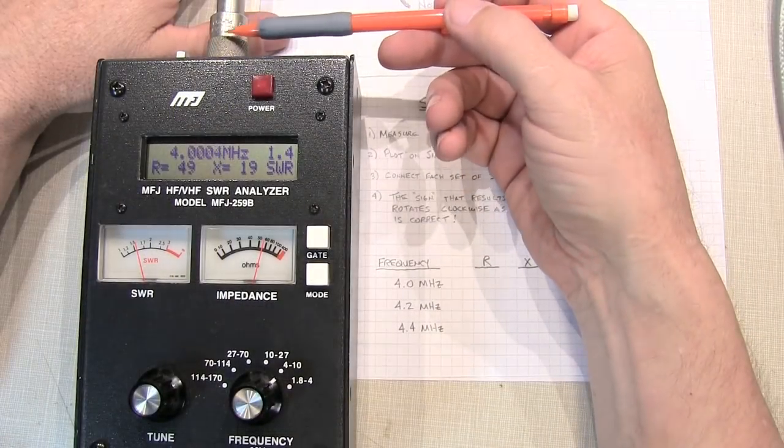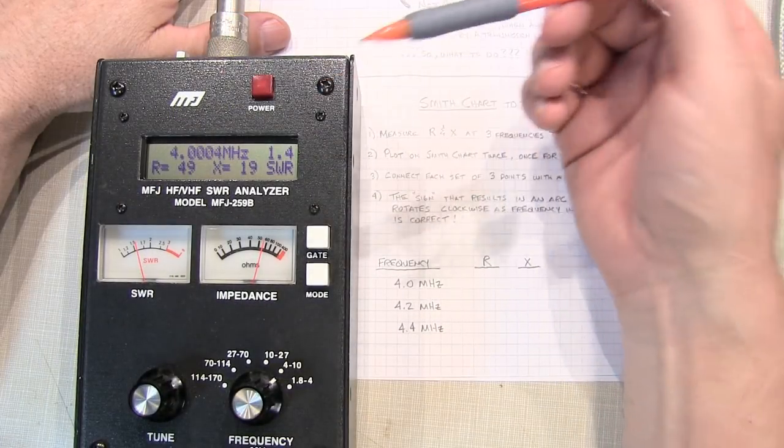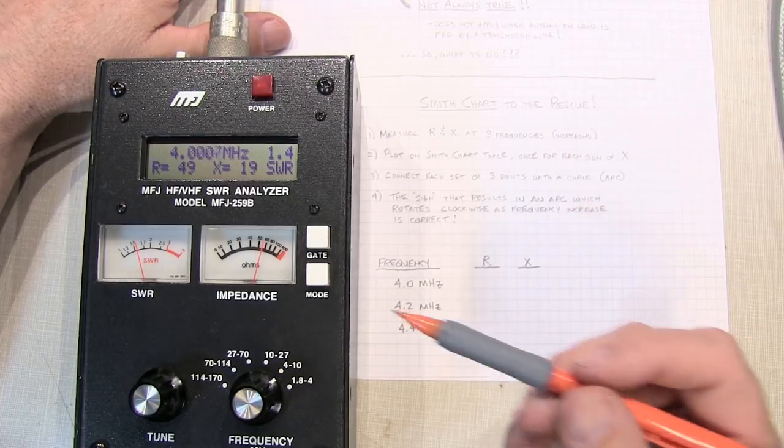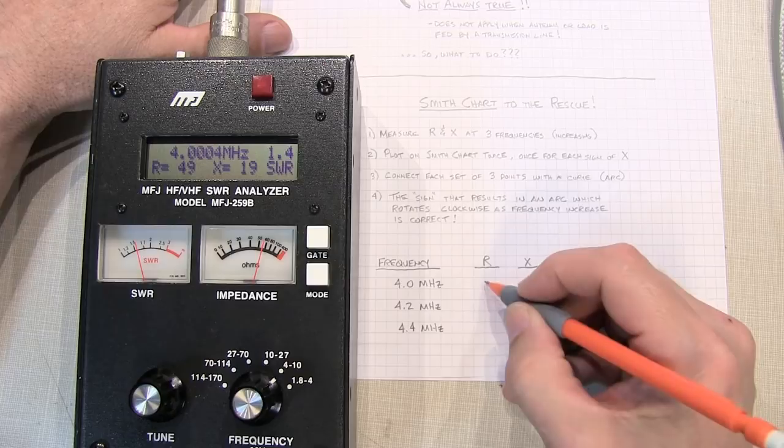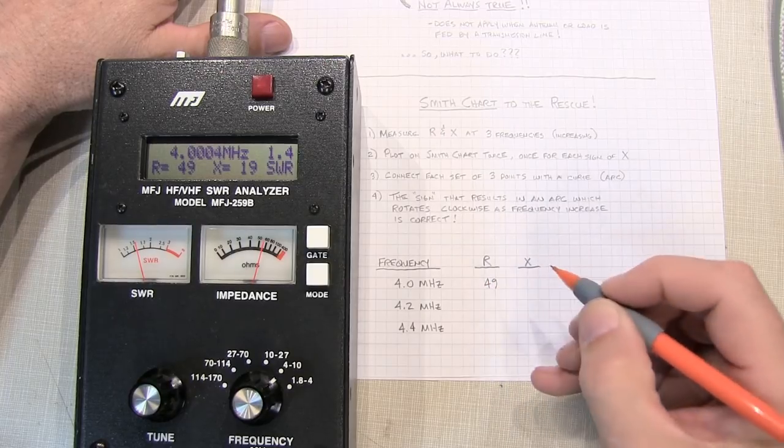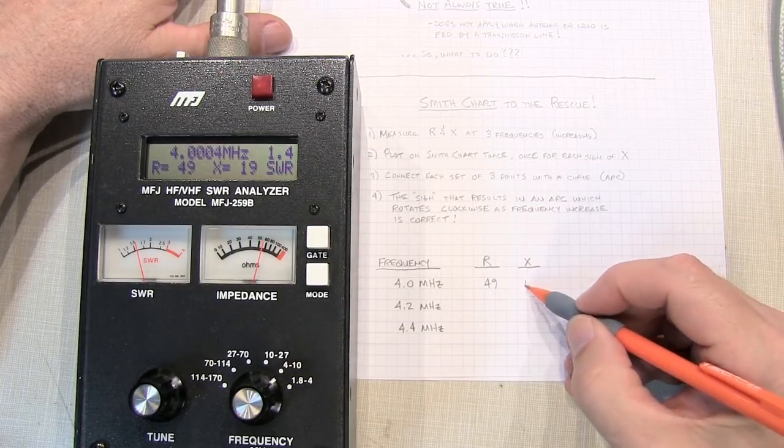I've got a transmission line and a complex load connected to my analyzer here. So let's make three measurements. At 4 megahertz, the resistive part is 49 ohms and the reactive part is 19 ohms.